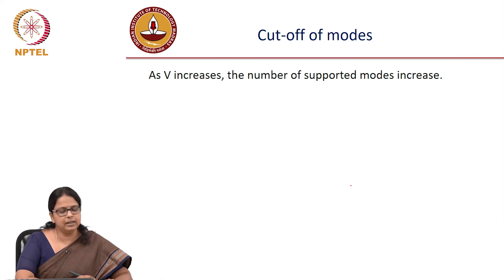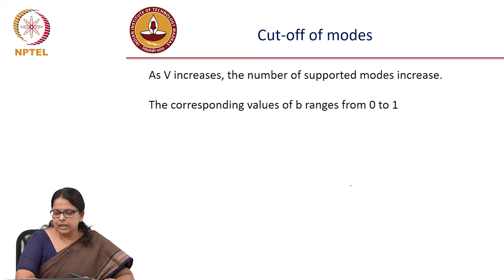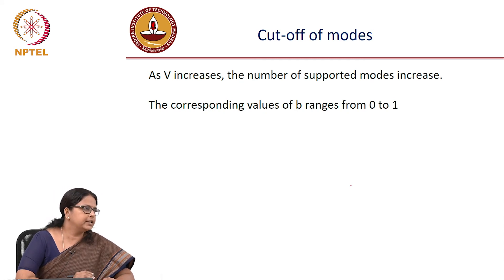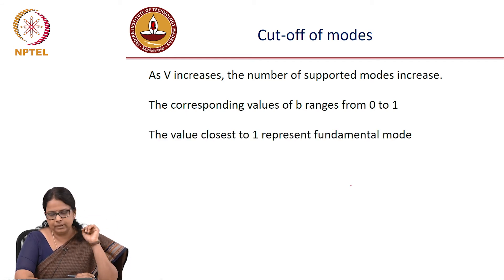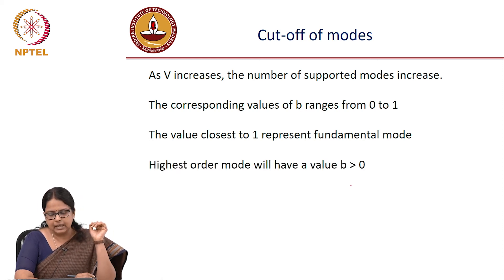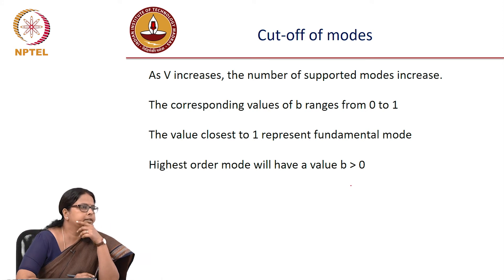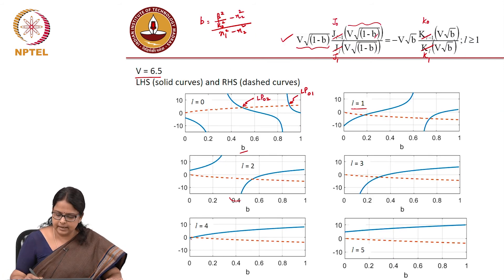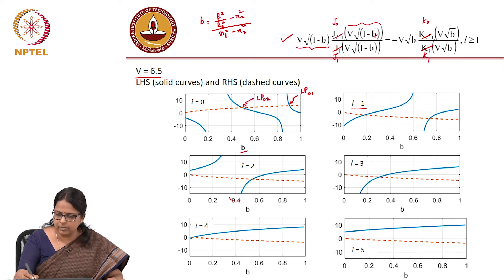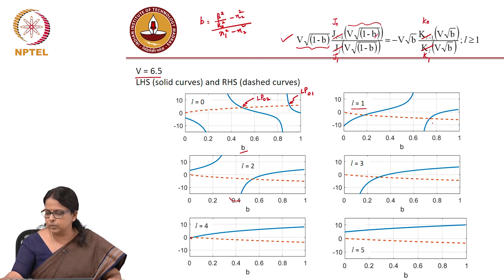The corresponding value of B always ranges between 0 and 1, because you want the effective index restricted between the core index and the cladding index. The value of B closest to 1 represents the fundamental mode. The highest order mode will have a B greater than 0, because that is a bounding point. For example, here the highest order mode is LP02. So this one is LP11, this would be LP12. What about LP13? Why did we not have an LP13? The point of intersection is happening outside the range B equal to 0 to 1.